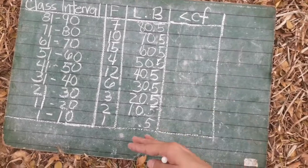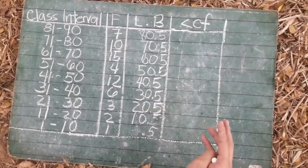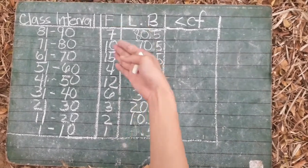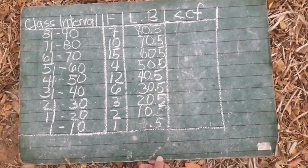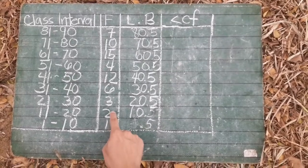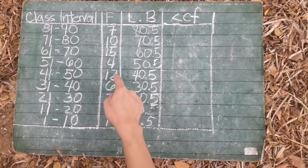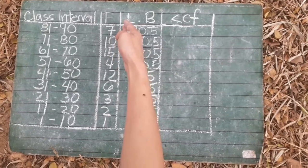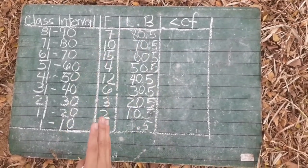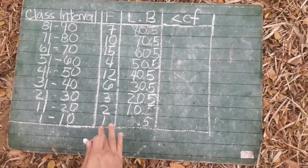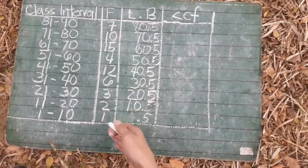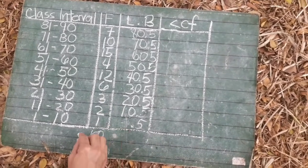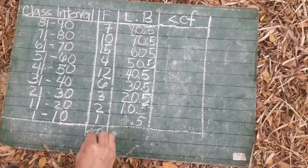After we got all of the lower boundary, we have to add all of the frequency here. So, 1 plus 2 plus 3 plus 6 plus 12 plus 4 plus 15 plus 10 plus 7. The total of all of that is 60. We will write it on the lower column in frequency, which is 60. Total.